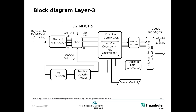Layer 3 now has an additional block. After this PQMF filter bank of 32 subbands, in each of those subbands it has an MDCT of 6 or 18 subbands, resulting in 576 subbands here — sometimes called spectral lines. The psychoacoustic model here is based on an FFT of length 1024, and it drives the bit allocation in the distortion control loop.